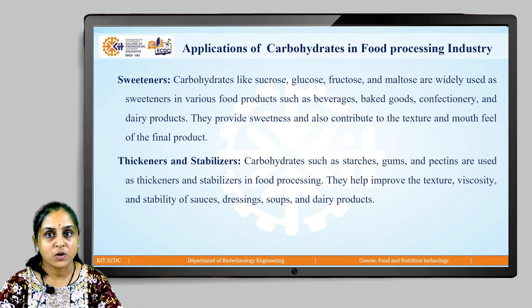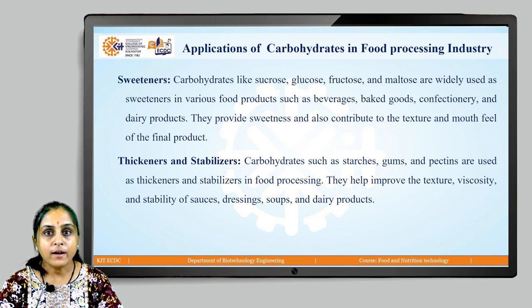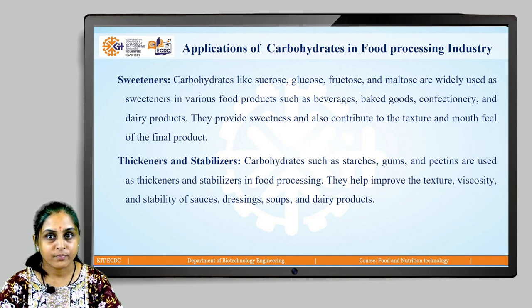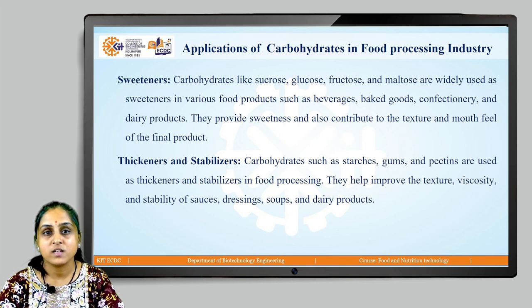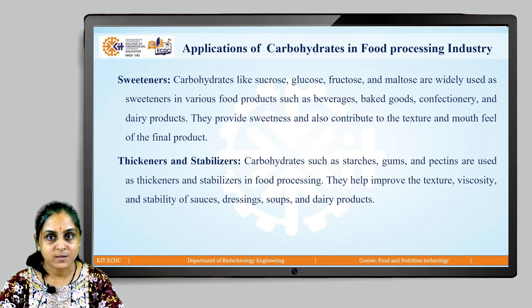Let's begin with the application of carbohydrates in food processing industry. Carbohydrates are widely used as sweeteners — for example, sucrose, glucose, fructose — in various food products like beverages, baked goods, confectionaries, and dairy products. Along with that, they act as thickeners and stabilizers.